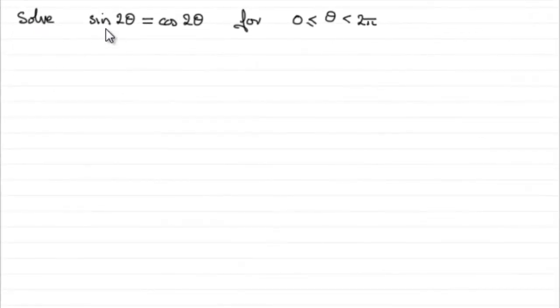So we've got to solve this equation, sine 2 theta equals cos 2 theta for theta greater than or equal to 0 but less than 2 pi. And this would be measured in radians.